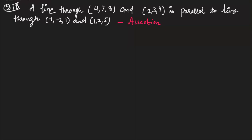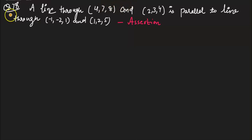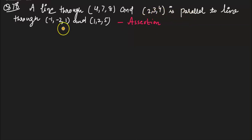Good evening dear students. In this video I am going to solve the rest of the questions of your given assignment. I am starting with question number 78. A line through the point (4,7,8) and (2,3,4) is parallel to the line through minus 1, minus 2, 1 and 1, 2, 5.